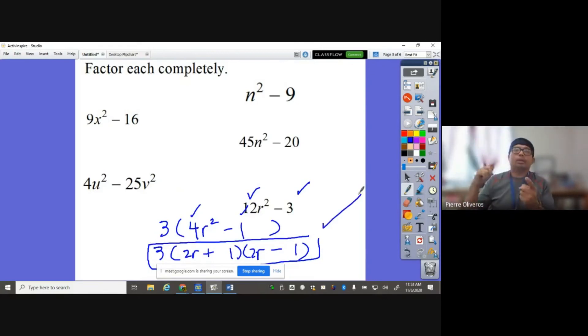There you go. I hope you learned now how to factor out by GCF and factor by using difference of two squares. And as always, kaboom. Kaboom, kaboom.